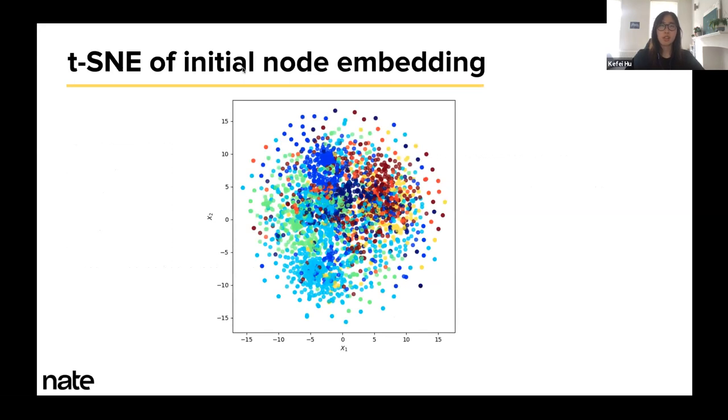To help you get an idea on the initial embedding, this is the t-SNE visualization of the initial vocab embedding for all the publications, and they are colored by their ground truth subject. It looks like a big hot mess. So let's see if applying some graph models can help the representation become more structured and more meaningful.